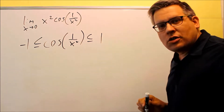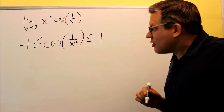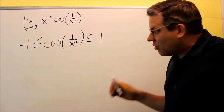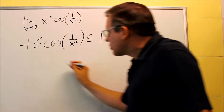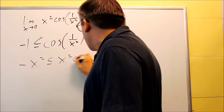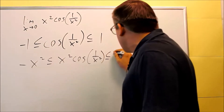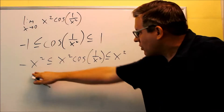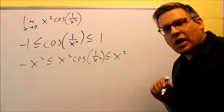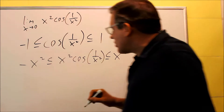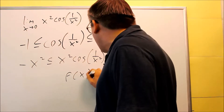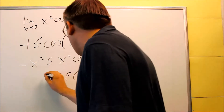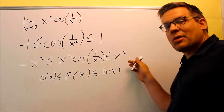That's the first true statement we know. Next, we notice that in the original equation we have an x squared out front, so we're going to multiply everything through by x squared. We get negative x squared ≤ x squared cosine(1/x²) ≤ x squared. Now we have the original function in the middle. Looking at the theorem we just discussed, the middle function is our f of x, the largest is h of x, and the smallest is g of x. So we've formed something we know is true.